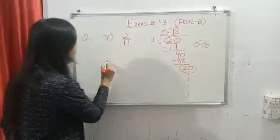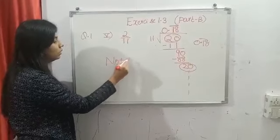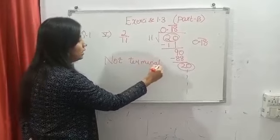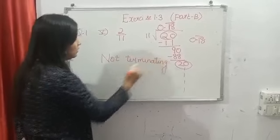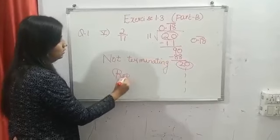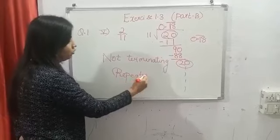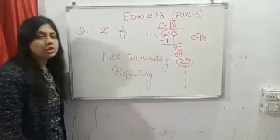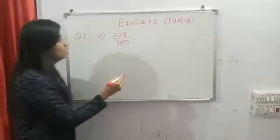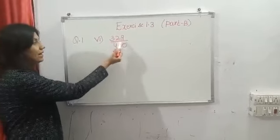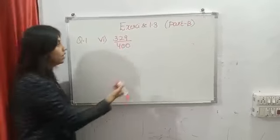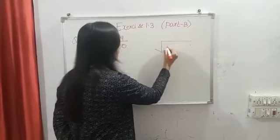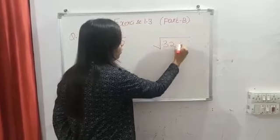This type of decimal representation is again not terminating but repeating. Now let's see the last part of question number 1. The next one is 329 divided by 400. Let's see whether the decimal representation will be terminating or not terminating.